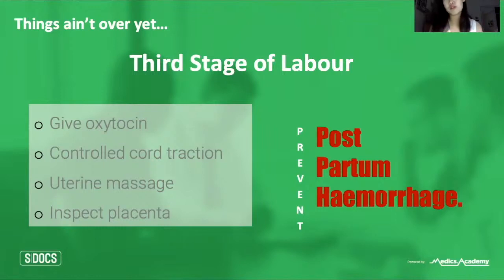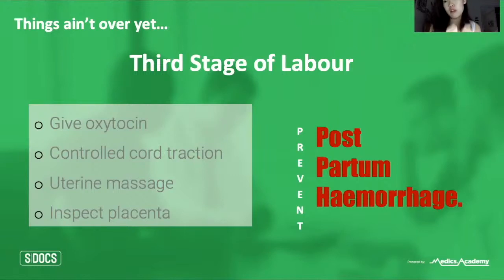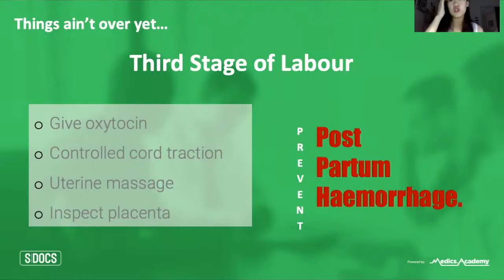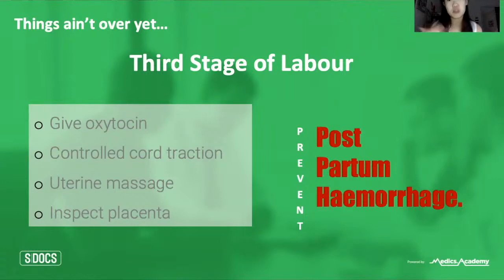Palpating the abdomen during stage three allows you to feel the descent of the uterus, which correlates with the migration and descent of the placenta. Once the placenta reaches the vagina, the uterus contracts into a hard ball to stop bleeding. Blood loss should not exceed 500 ml — anything above this is postpartum hemorrhage. If the placenta has not come out after 45 minutes, this is prolonged third stage and intervention is required.